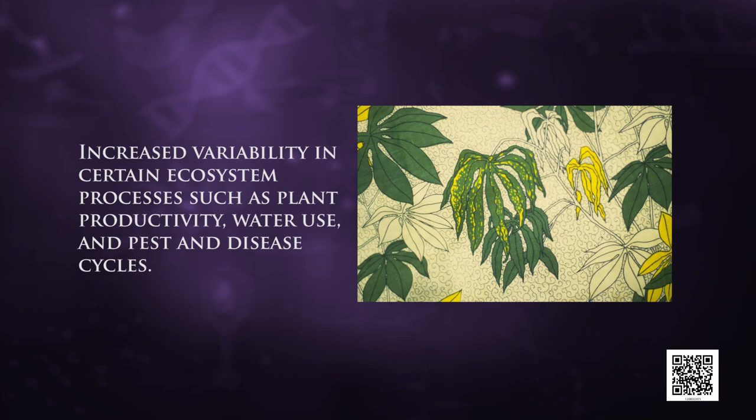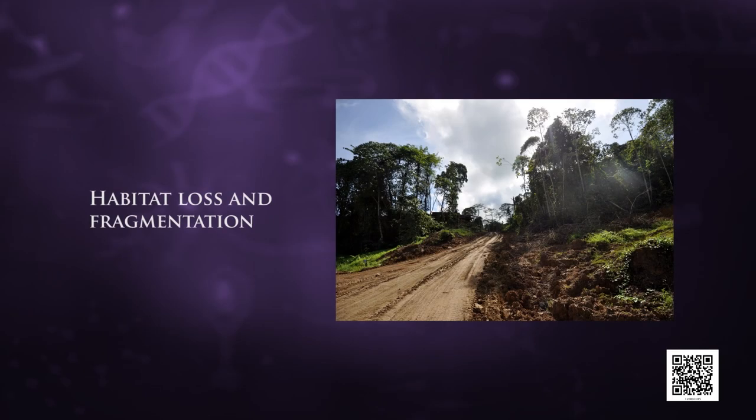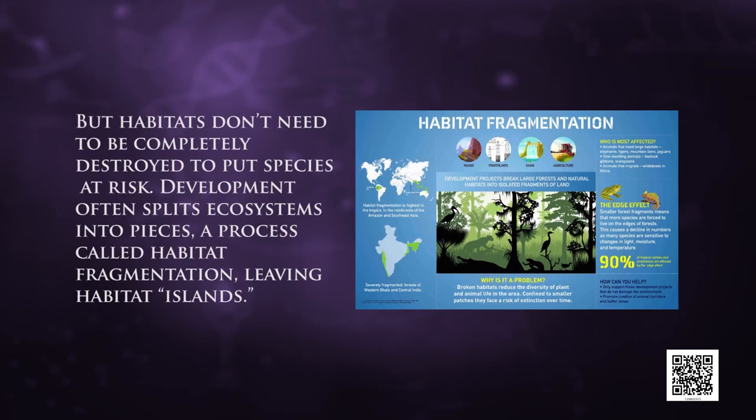The accelerated rates of species extinction are largely due to human activities. There are four major causes, also called the evil quadrant. The first is habitat loss and fragmentation. When natural habitats are eliminated for agricultural or urban development, the number of species drops and some may become extinct. But habitats don't need to be completely destroyed to put species at risk — development often splits ecosystems into pieces, a process called habitat fragmentation.